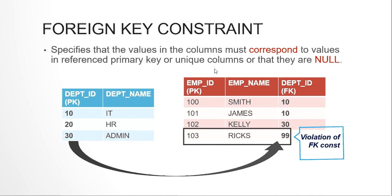The foreign key constraint specifies that the value in a column must correspond to the values in the referenced primary key or unique key, or they can be null. For example, if the employees table has columns employee ID, employee name, and department ID, I can have a foreign key on the department ID column referencing some other table — say a departments master table.